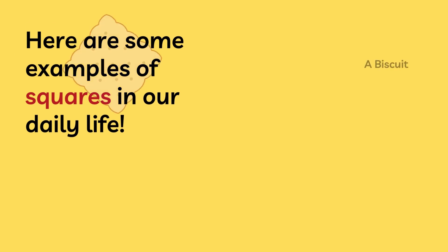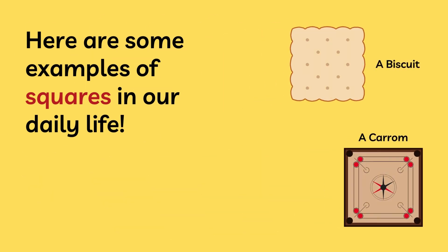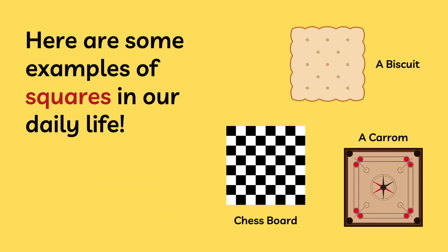This is a square. Here are some examples of squares in our daily life: a biscuit, a carom, a chess board.